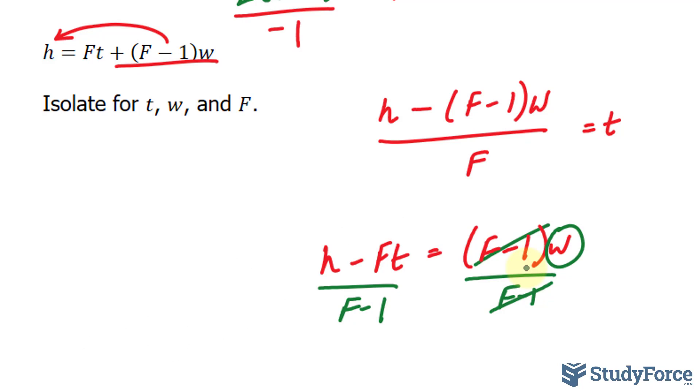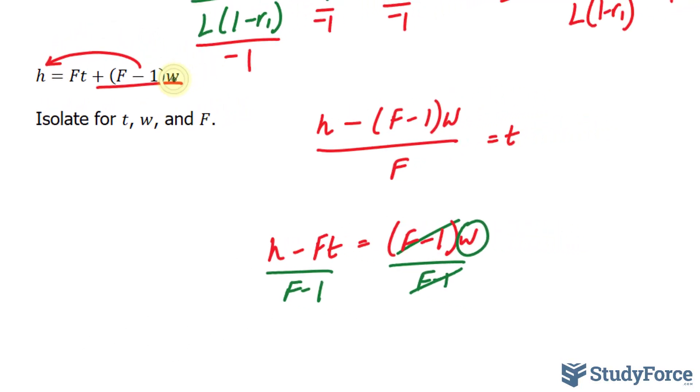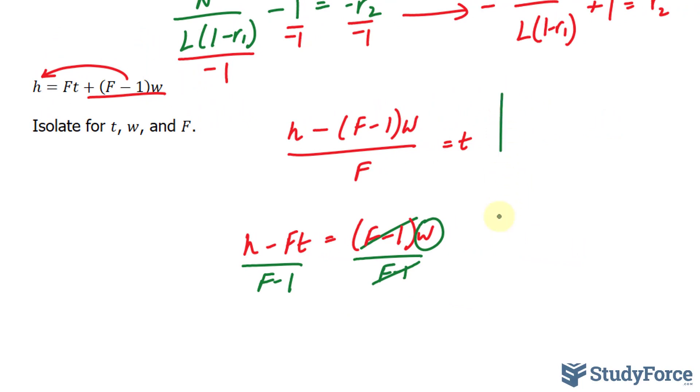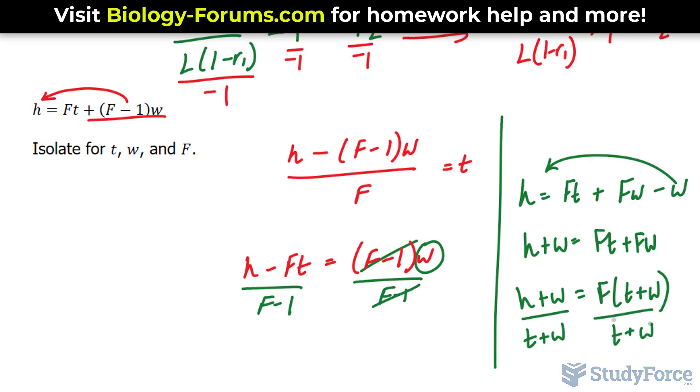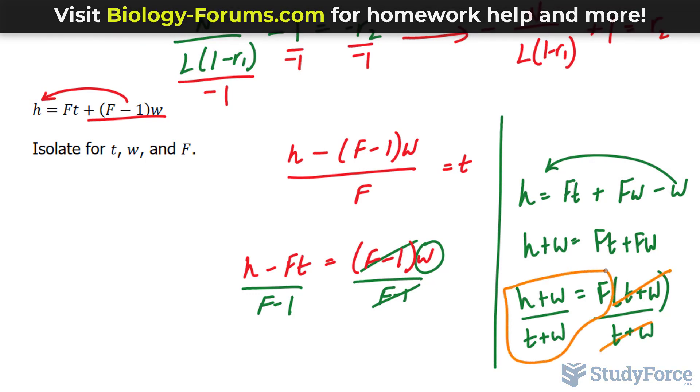And now to get F alone, this is probably the more challenging one. You multiply this W into these parentheses. So I'll show you right here. H is equal to Ft plus Fw minus W. Bring the W over. You get H plus W is equal to Ft plus Fw. Now you can common factor in F from both of these terms. H plus W on the left side. That doesn't change. And since we're looking for F, we can divide both sides now by T plus W. So T plus W at the bottom here. And T plus W cancels out, leaving you with F is equal to everything on the left.